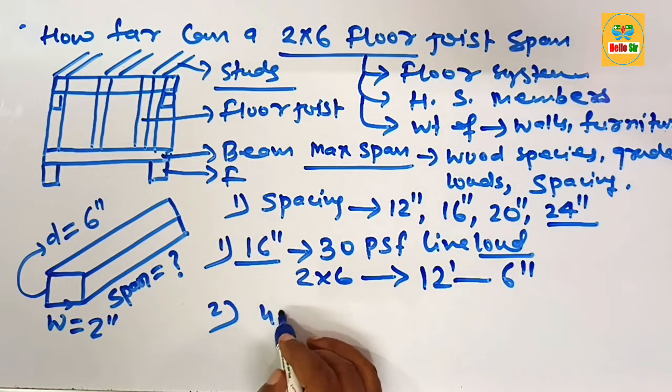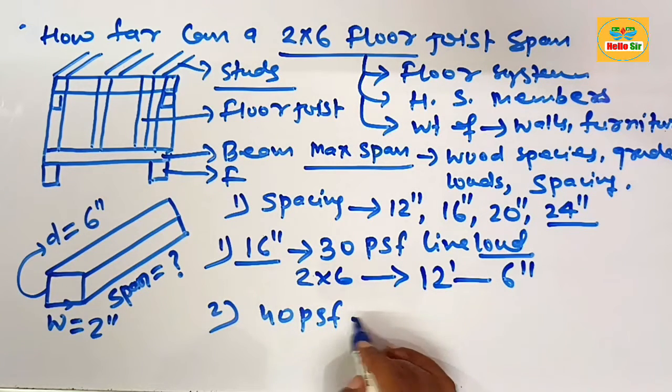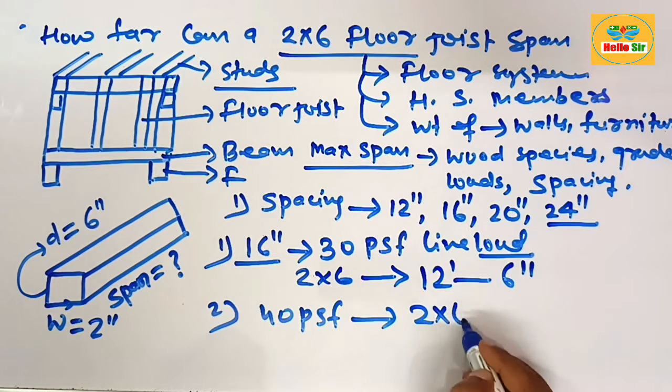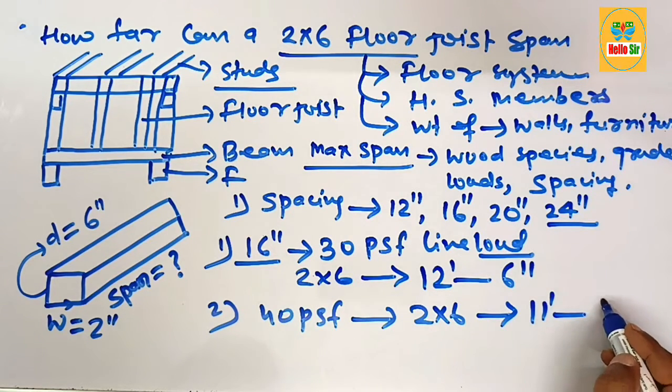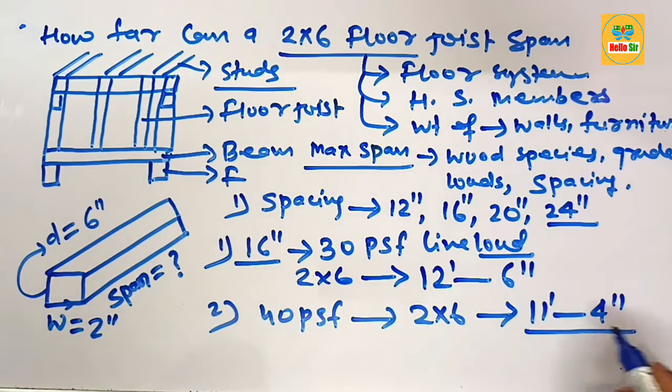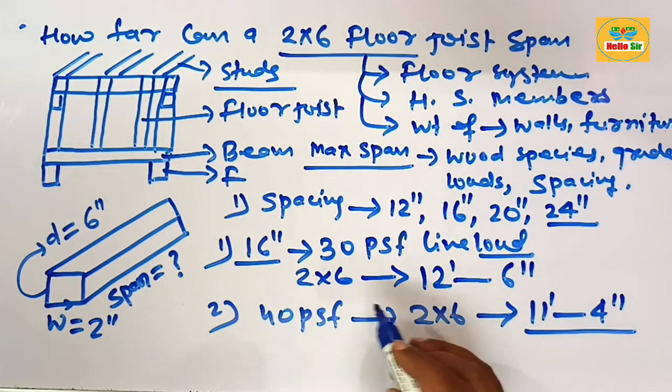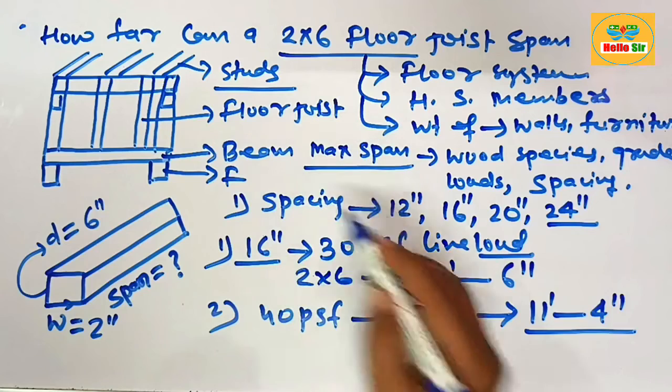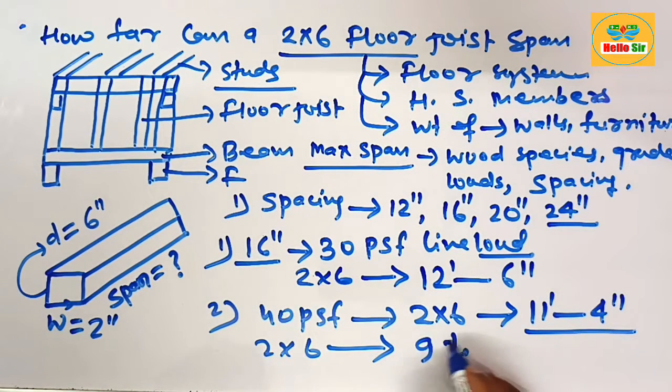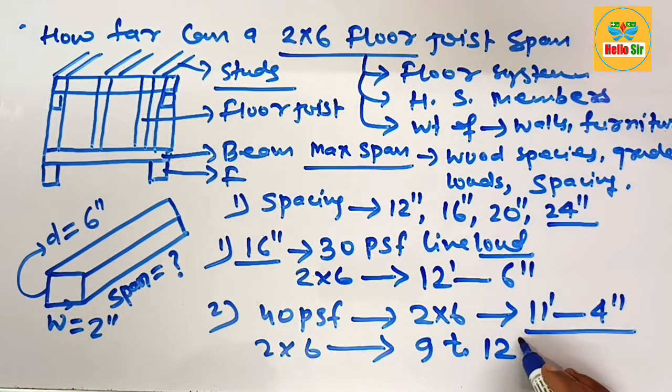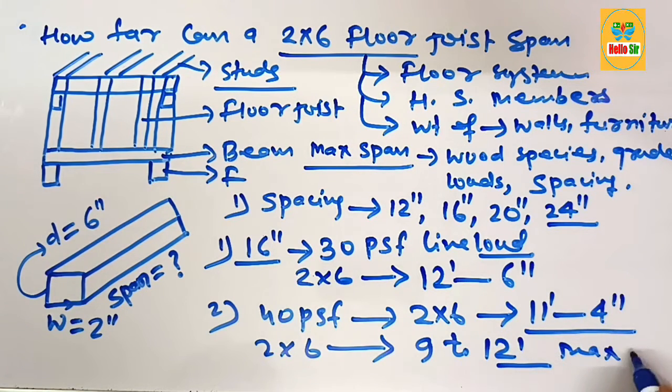And at 40 psf live load, a 2 by 6 floor joist can span 11 foot 4 inches. But in general rule, you can find a 2 by 6 floor joist can span 9 to 12 feet maximum. Remember this one.